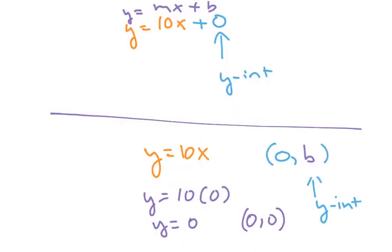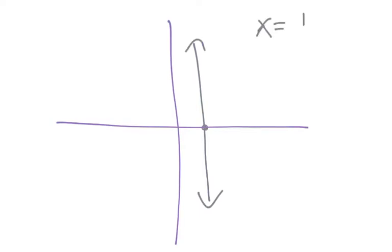If we look at the next question, number 19, you're asked to graph x equals 1. So what we want to remember is when you have an x graph, it goes up and down. So we give you x equals 1, then we know that it goes up and down at 1.